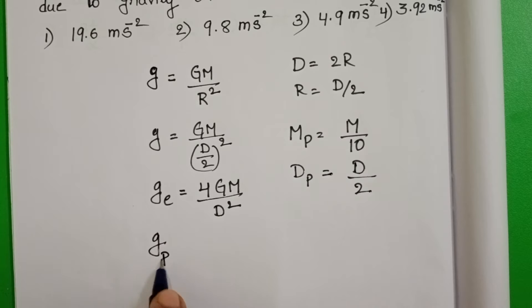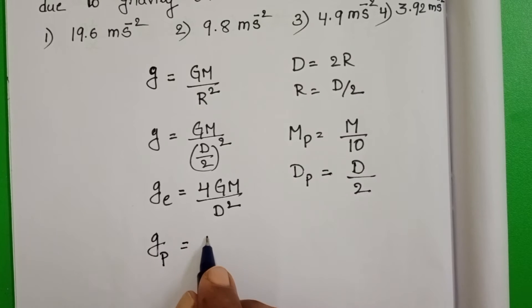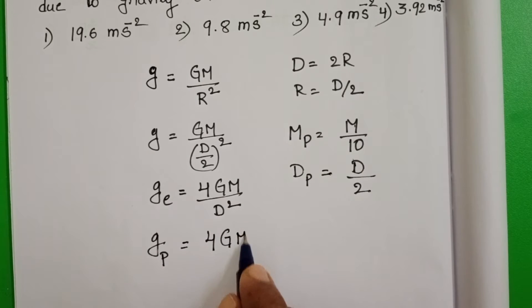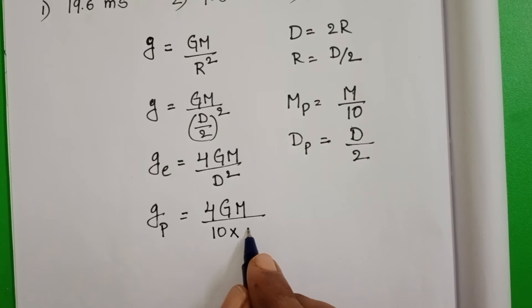Acceleration due to gravity on the surface of the given planet is equals to 4 into G into in place of the mass M by 10. And in place of diameter D by 2 whole square.